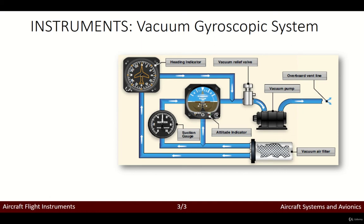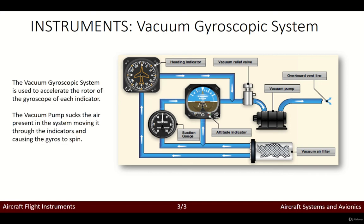It is important to monitor vacuum pressure during flight because the attitude and heading indicators may not provide reliable information when suction pressure is low. The vacuum gauge is generally marked to indicate the normal range, and some aircraft are equipped with a warning light that illuminates when the vacuum pressure drops below the acceptable level. When vacuum pressure drops below the normal operating range, the gyroscopic instruments may become unstable and inaccurate, so cross-checking the instruments routinely is a good habit and is essential for maintenance.